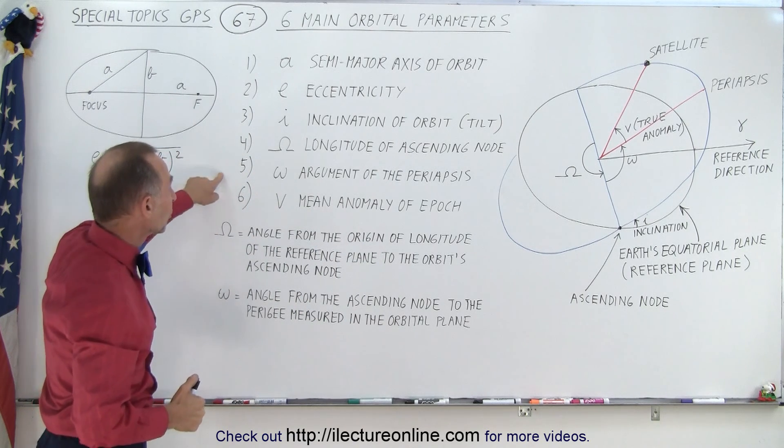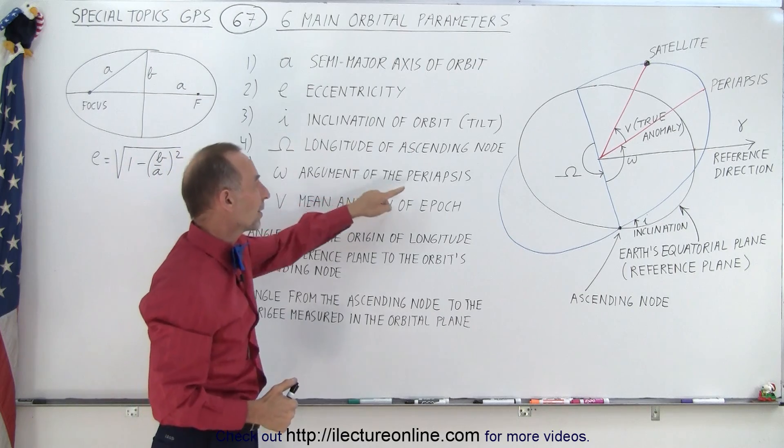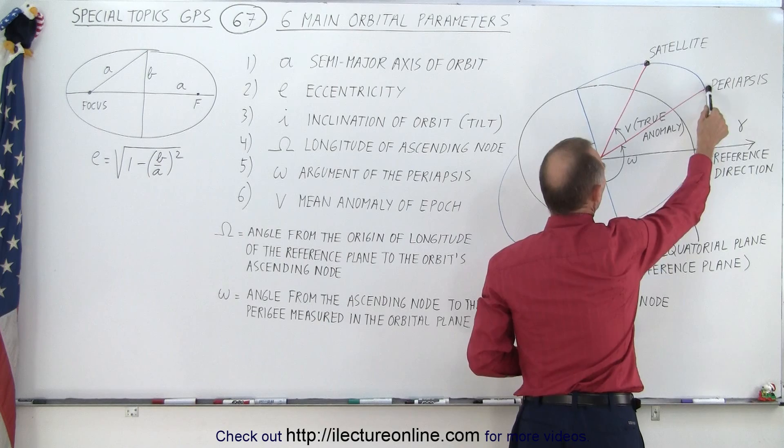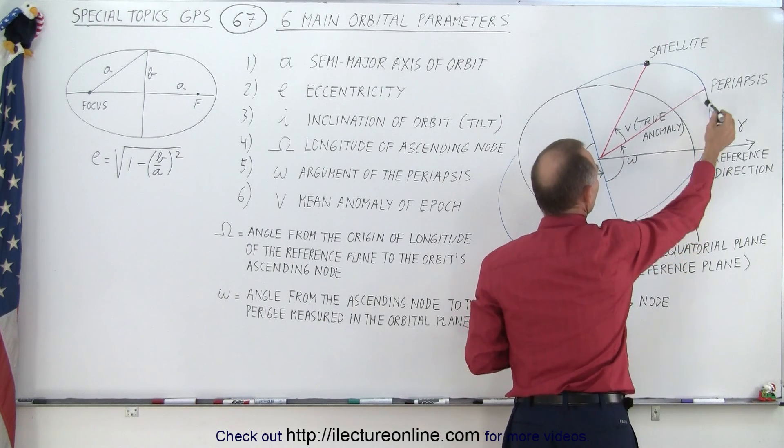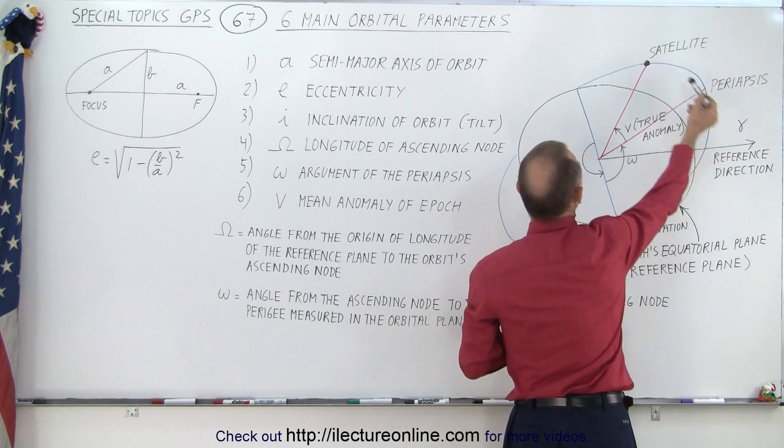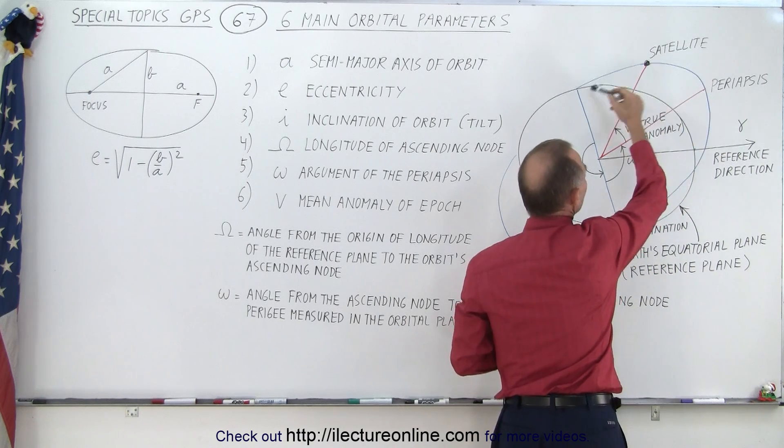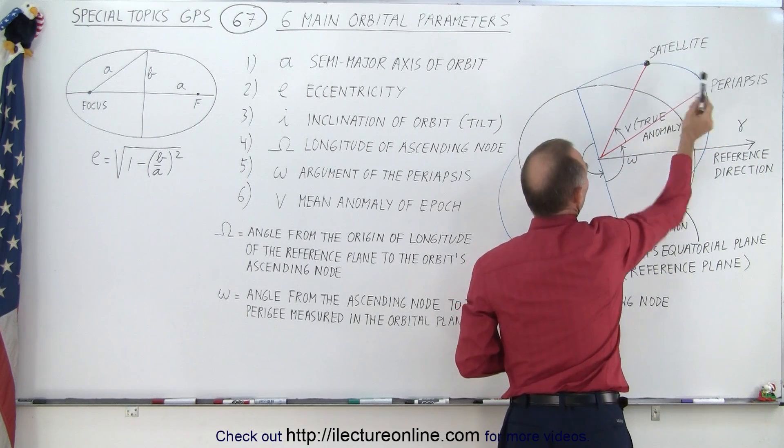The next parameter is what we call the argument of the periapsis. So the periapsis is essentially the point where it's closest to the center of the Earth, so that's where it's closer, then this would be where it's farther. So that's perigee and apogee, so to speak, in an orbit, and so that would be the closest point,